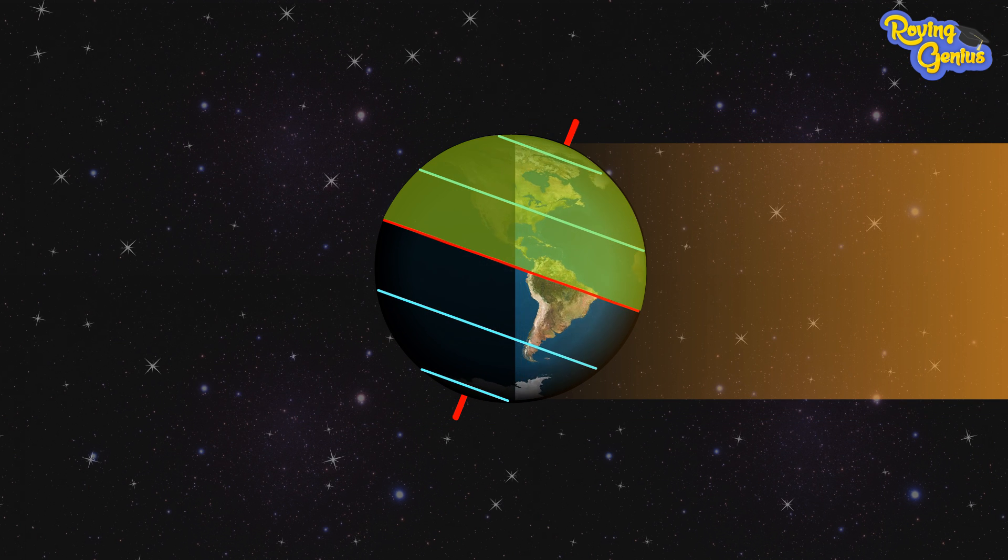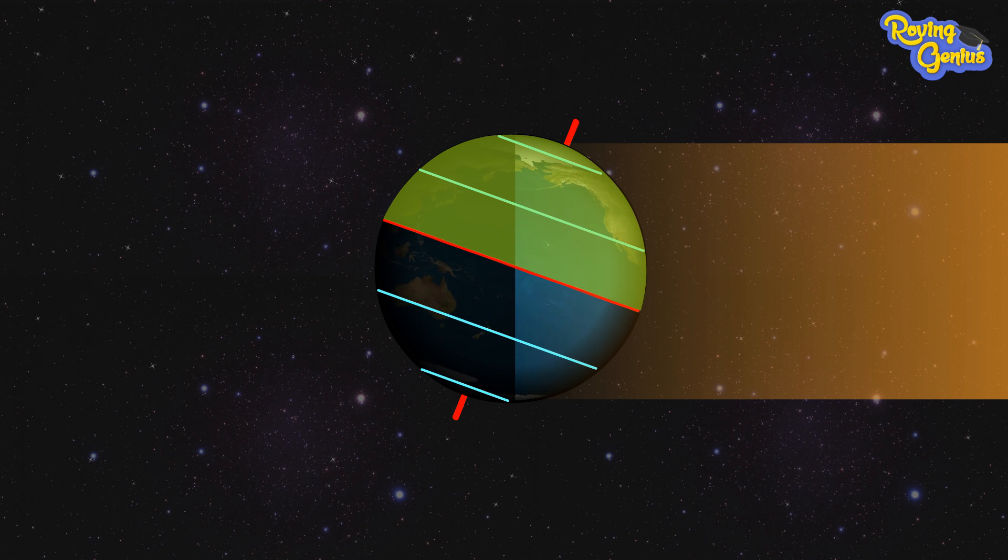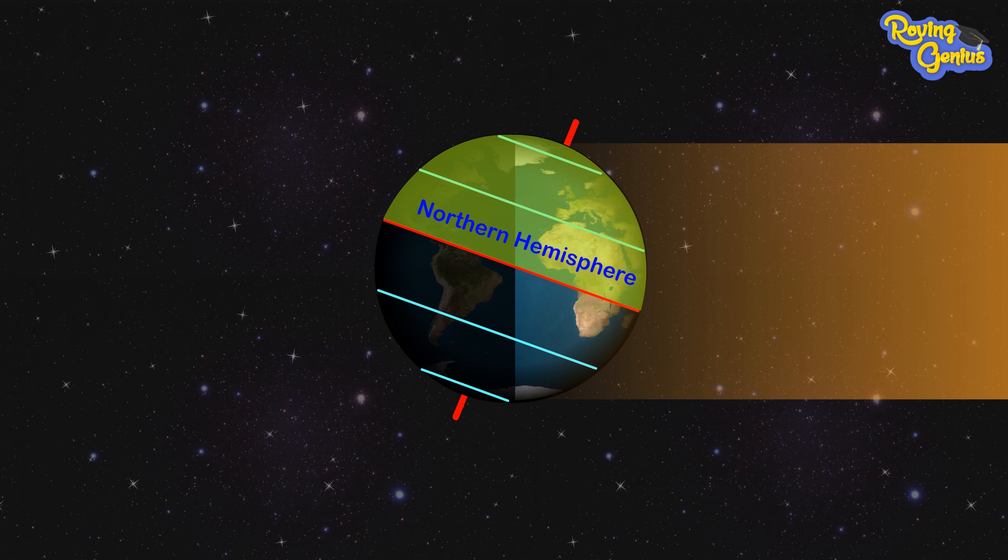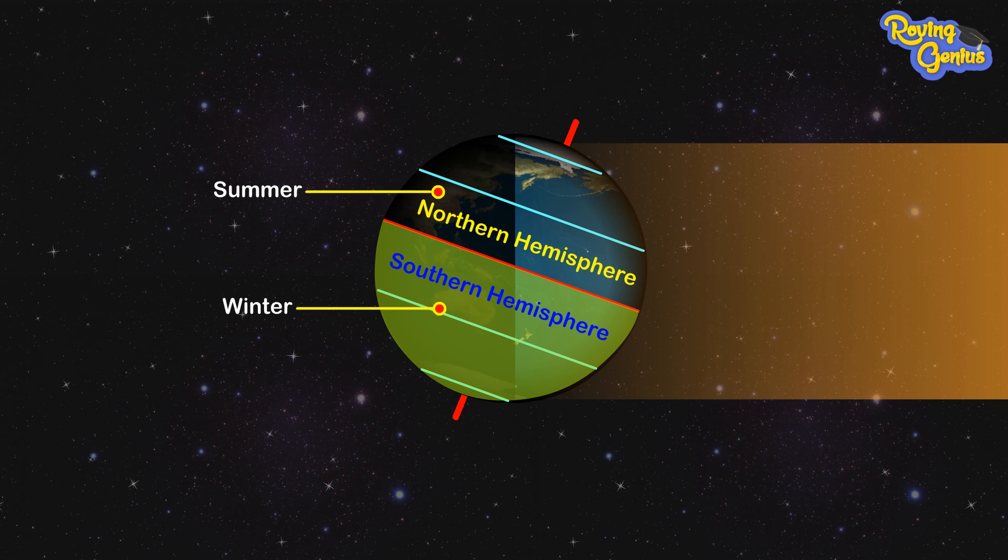When the North Pole is tilted towards the Sun, the Northern Hemisphere receives more direct sunlight. It is summer in the Northern Hemisphere and winter in the Southern Hemisphere.